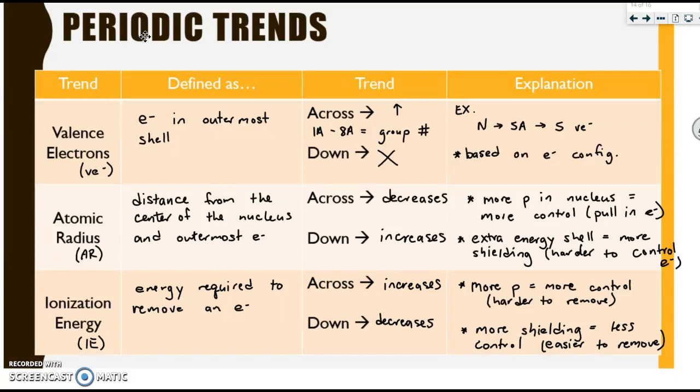Another trend is atomic radius. It's the distance from the center of the nucleus to the outermost electron. So basically, the size of the atom. And as you travel across the table, this decreases. As you travel down the table, this increases. Let's talk about why. As you go across the table, there are more protons in the nucleus, but you're in the same energy level. Those protons have more control, so they can pull their electrons in closer. When you go down the table, there's now an extra energy shell or extra ring. Therefore, there's more shielding away from the nucleus. So the electrons are harder to control, so they're more likely to spread out.